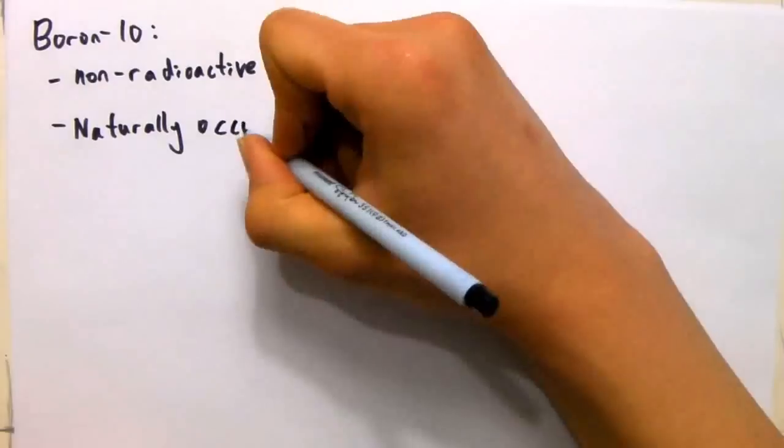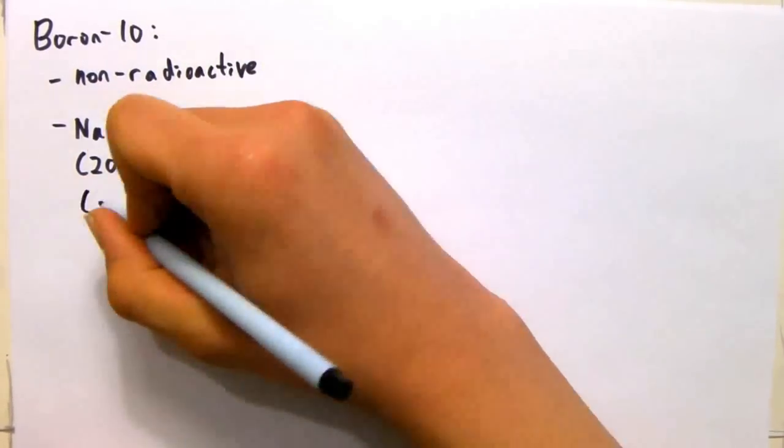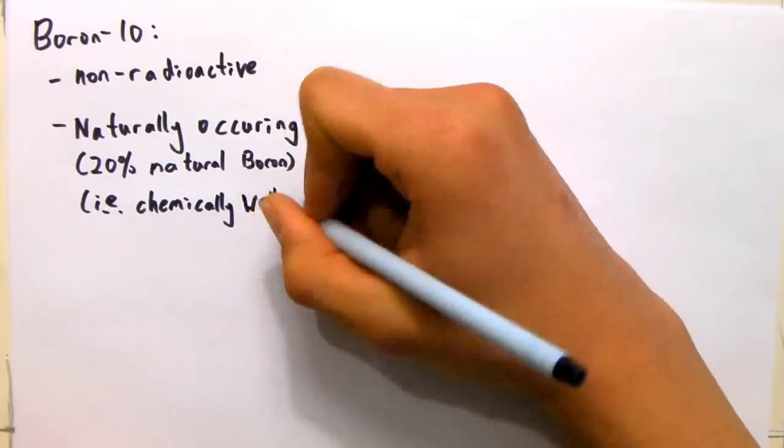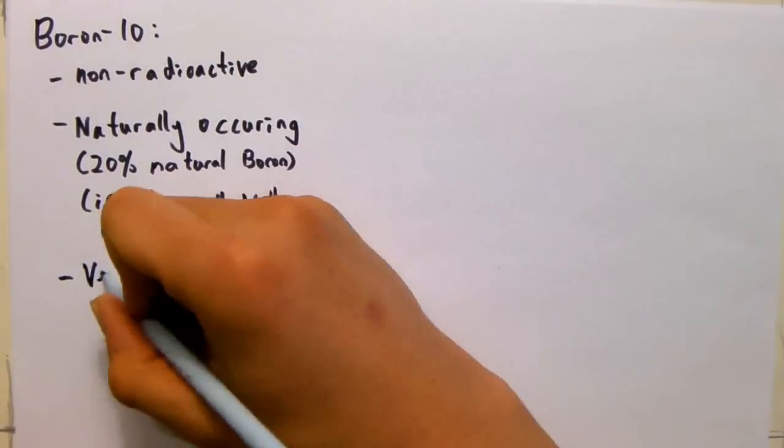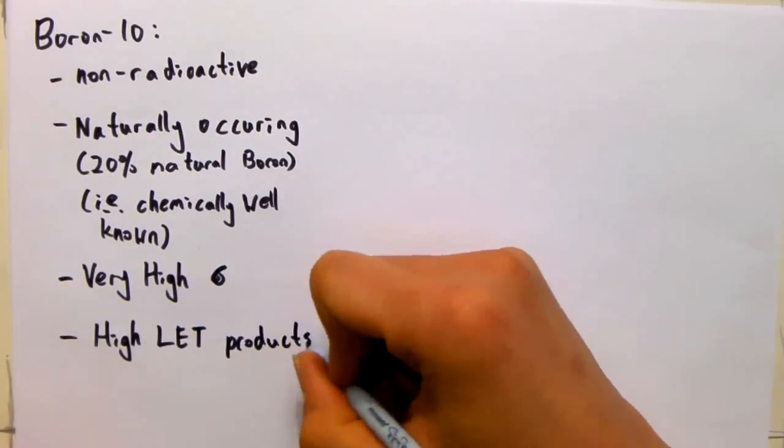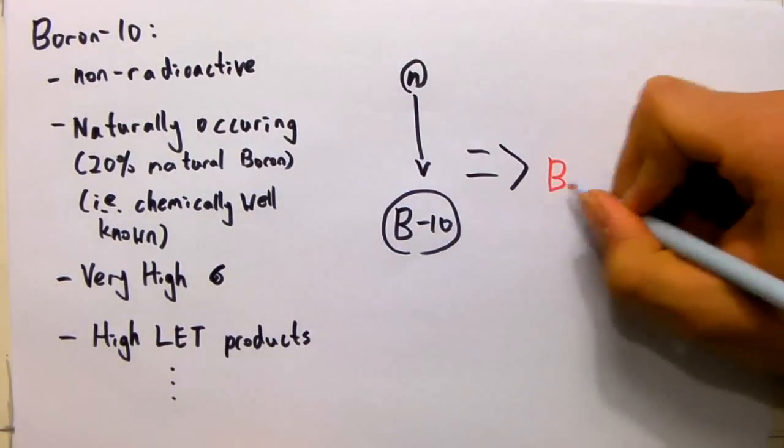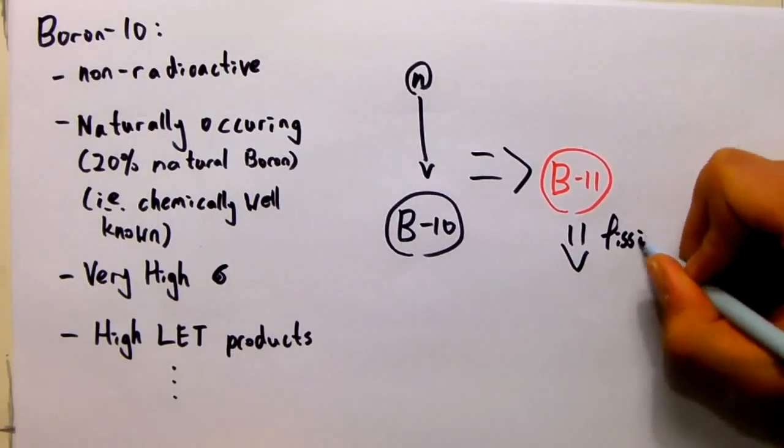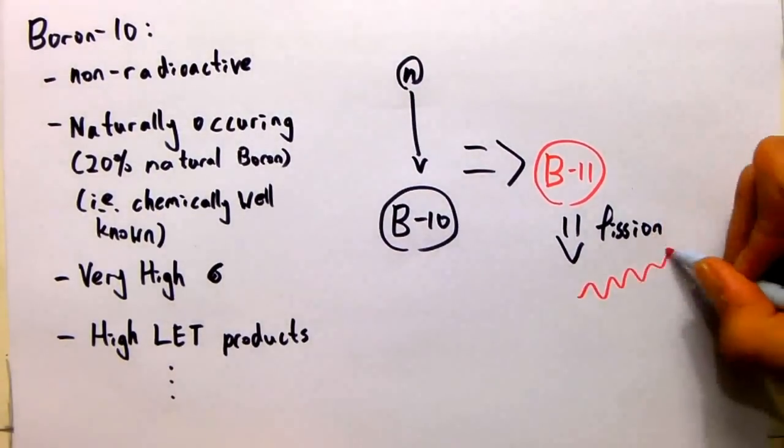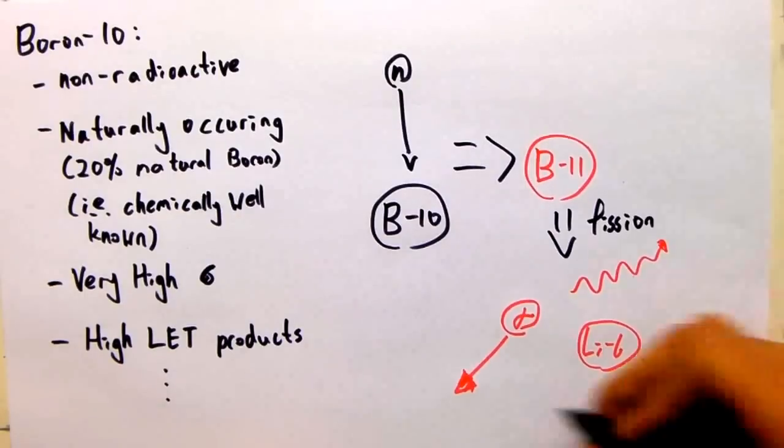Now let's have a look at the boron. Boron-10 is not radioactive, it has a very high neutron capture cross section, and it is a naturally occurring isotope. When it captures a thermal neutron, it changes to boron-11 for a brief time, then fissions. The binding energy produced by this reaction goes into the energetic alpha particle, recoiling lithium-6 ion, and the gamma ray, which occurs 94% of the time.